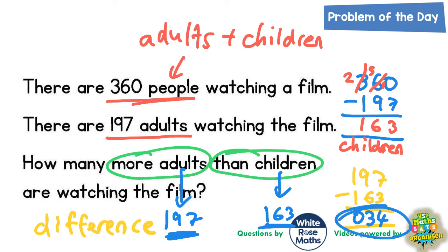Our final answer is 34. How many more adults than children are watching the film? 34 more adults.